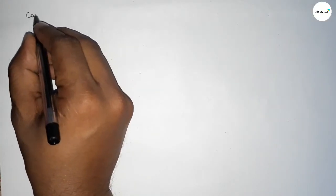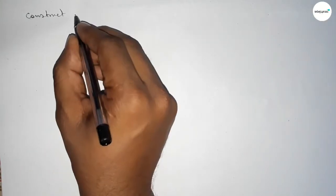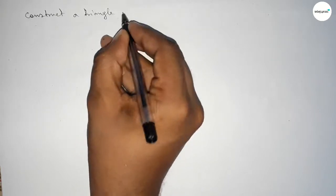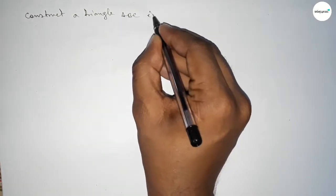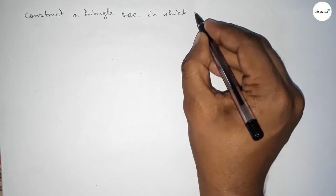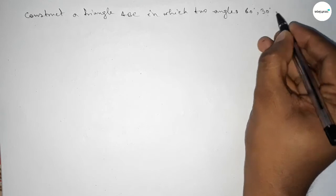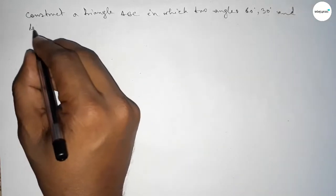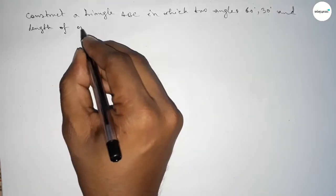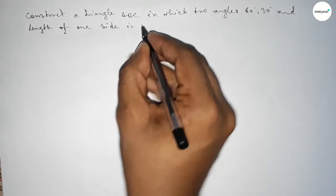Hi everyone, welcome to SI Share Classes. Today in this video we have to construct a triangle ABC with given two angles, 60 degrees and 30 degrees, and given length of one side of the triangle is 6.5 centimeters.